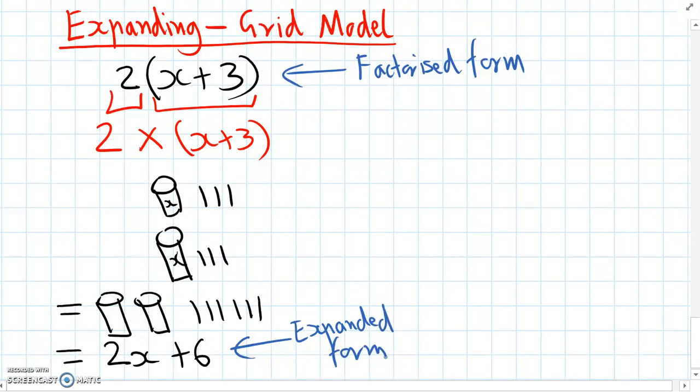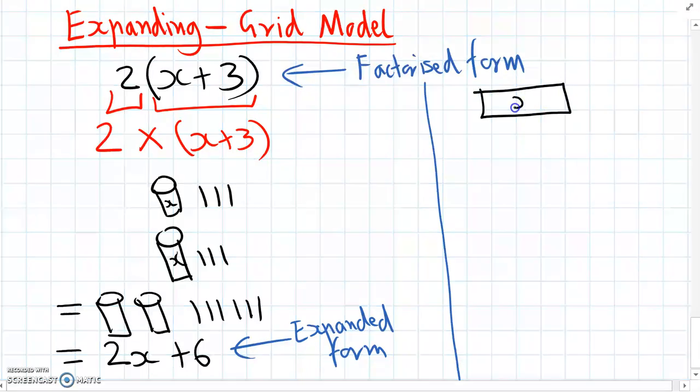The next thing we'll practice is a different model of doing expanding. It's always good to see things in different ways. This model is called the grid model. For this grid model, we have two different types of building blocks using tiles. We've got x's, which are a long rectangle, and we've got ones, which are just the numbers and these are a square.